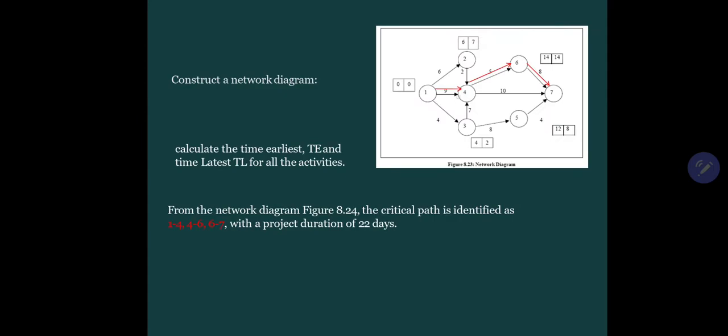Second step, draw the network diagram. We have already drawn the network diagram here. First, this will represent TE and this one will be TL. So 0 plus 6 is 6, 6 plus 2 is 8 here. Or from here, 0 plus 4 is 4, 4 plus 8 is 12, 12 plus 4 is 16. Like this way, we will calculate all the TE and TL.